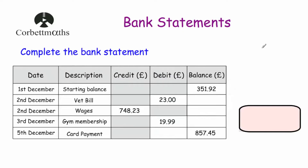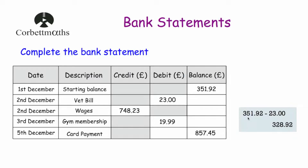Let's look at two typical questions. The first is a calculator question. We've got a bank statement to complete. On the 1st of December the starting balance is £351.92. On the 2nd of December there's a vet bill — a debit of £23. So we do 351.92 minus 23, which equals £328.92 — we write that in as the balance on the 2nd of December.